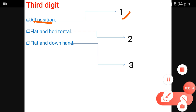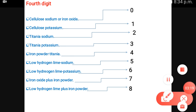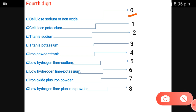What does the fourth digit indicate? The fourth digit tells us the composition of the electrode coating. The coating can be cellulose, sodium, or iron oxide. Zero and four are categories explained by this chart.